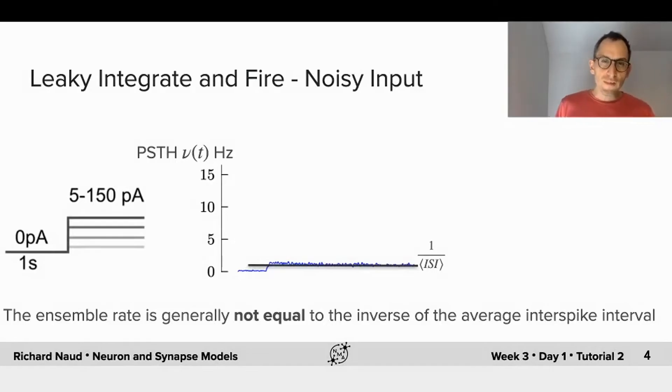So let me stress this fact a little further. Consider a population of neurons receiving a sudden input change, and we will first consider weak current flowing through to stimulate those neurons. Now, I show here the ensemble rate in blue as a function of time.